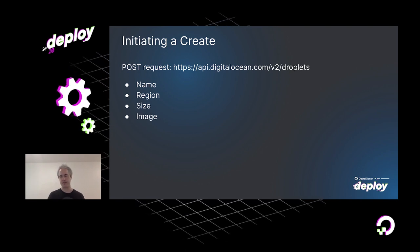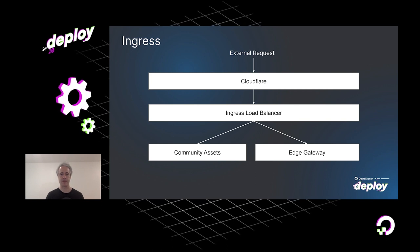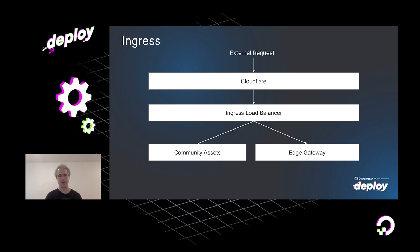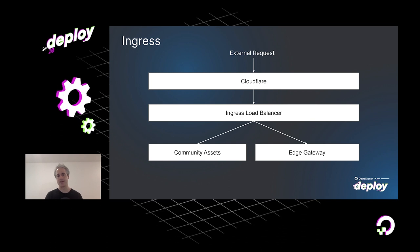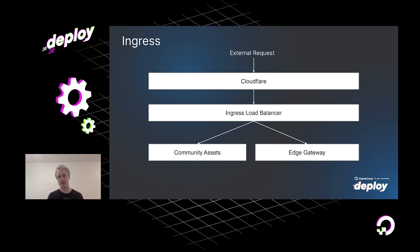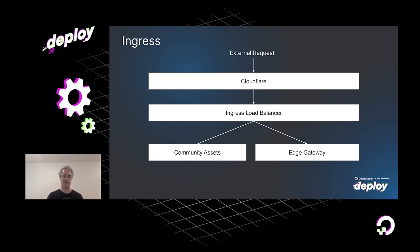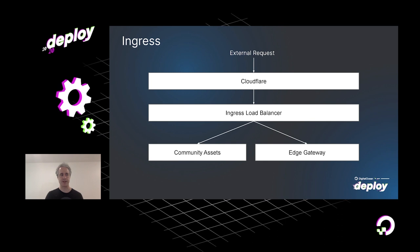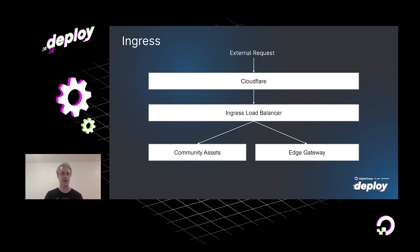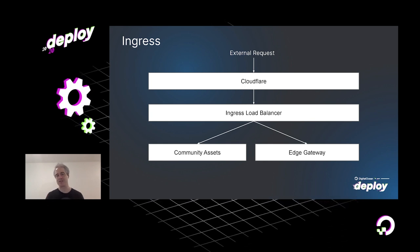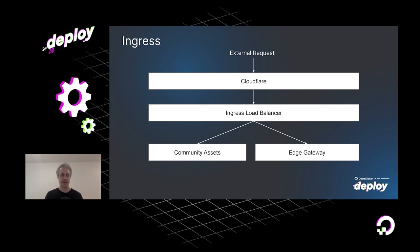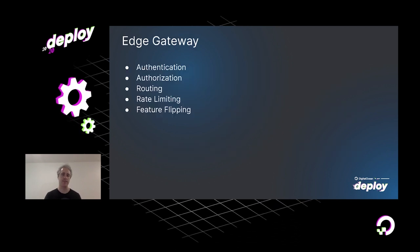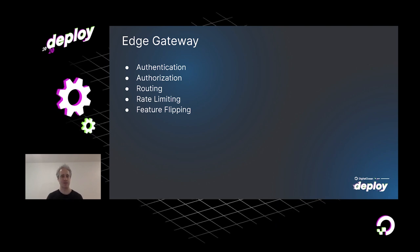The very first thing when you initiate that request is the digitalocean.com domain. We utilize Cloudflare's services both for CDN caching of static assets and also their DDoS protection. Once we proxy through Cloudflare, we're ingressing into our load balancers in the New York region. All requests — Cloud and API, www.digitalocean.com, our community site, Hacktoberfest assets — come into these load balancers and are distributed accordingly. For Cloud and API, we're directed to a service called the Edge Gateway.